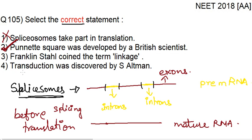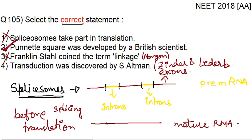The third option: Franklin Stahl coined the term linkage - this is wrong. When we think of linkage, the name that comes to mind is Morgan. T.H. Morgan coined the term linkage and studied it extensively. The fourth option: transduction was discovered by S. Altman - also wrong. Transduction was discovered by Zinder and Lederberg, the two scientists who together discovered the transduction process. So the correct answer is option number two.